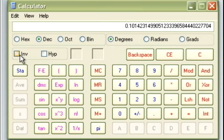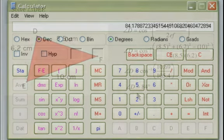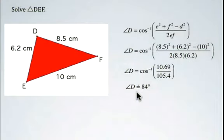And then we take the inverse cosine of that answer. And if we round to the nearest degree, we find that angle D is approximately equal to 84 degrees.